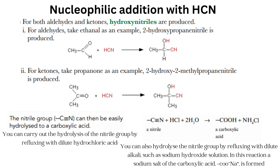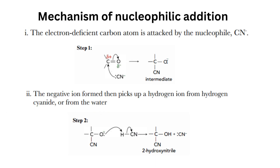The nitrile group can be easily hydrolyzed to a carboxylic acid. You can also hydrolyze it by refluxing with dilute alkali such as sodium hydroxide solution, in which case a sodium salt of the carboxylic acid (RCOONa) is formed. The mechanism of nucleophilic addition involves two steps: step one, the electron-deficient carbon atom is attacked by the nucleophile CN⁻; step two, the negative ion formed then picks up a hydrogen ion from hydrogen cyanide or from water.